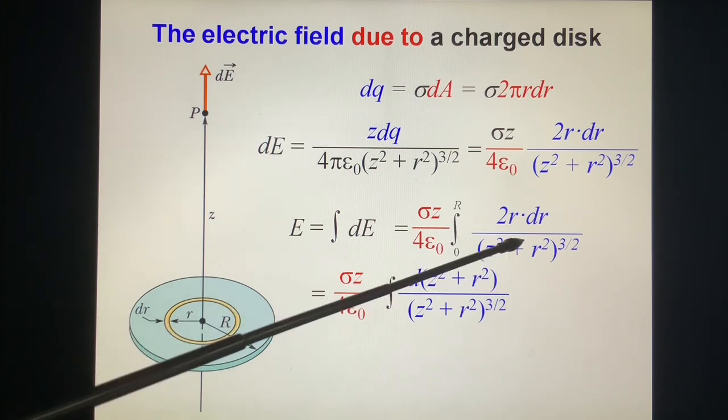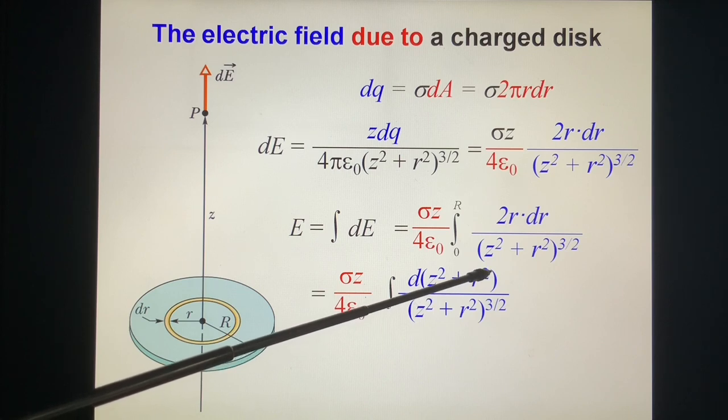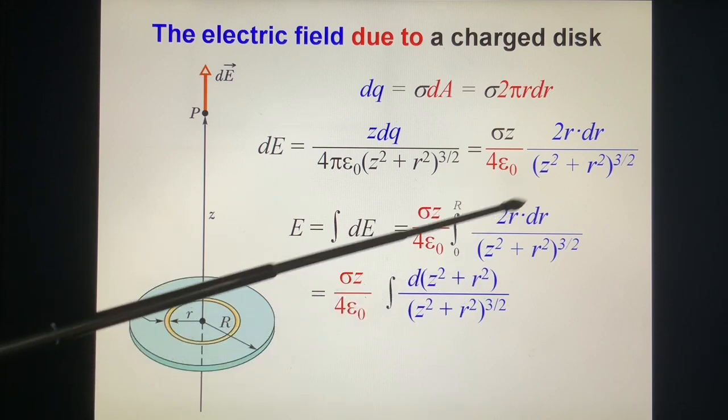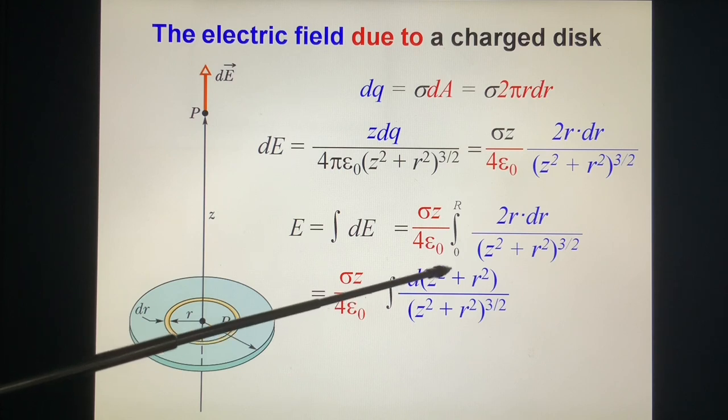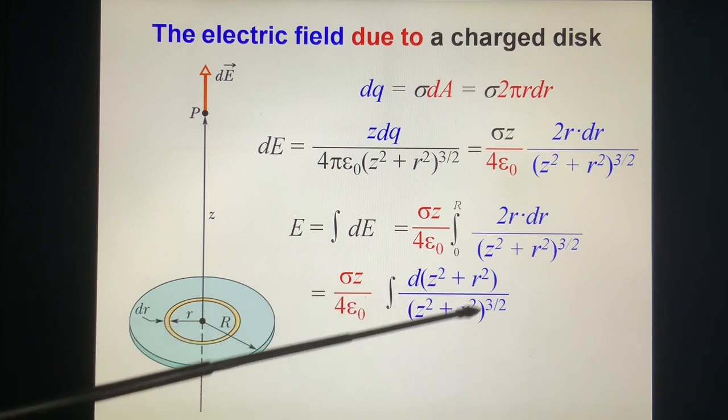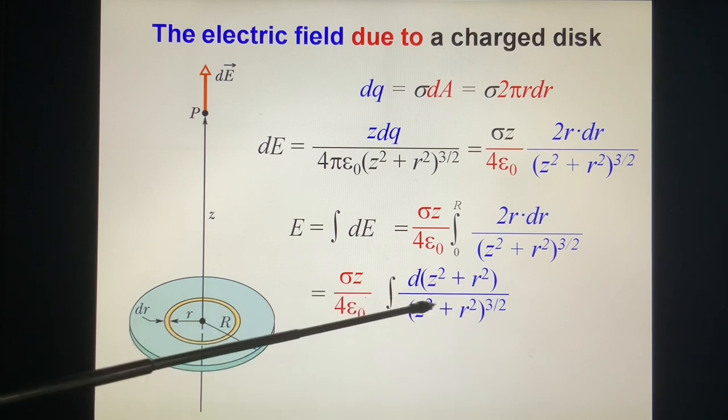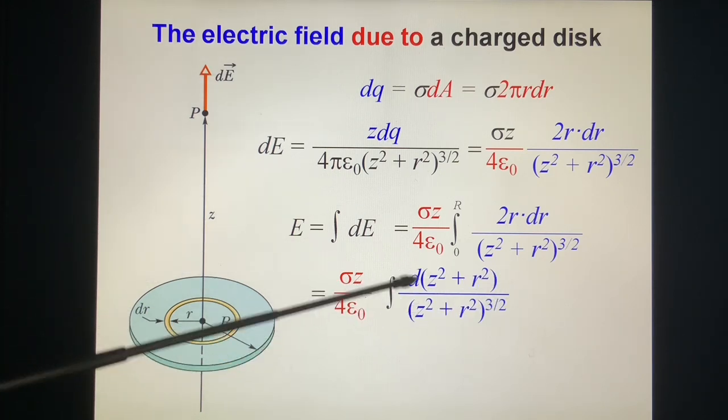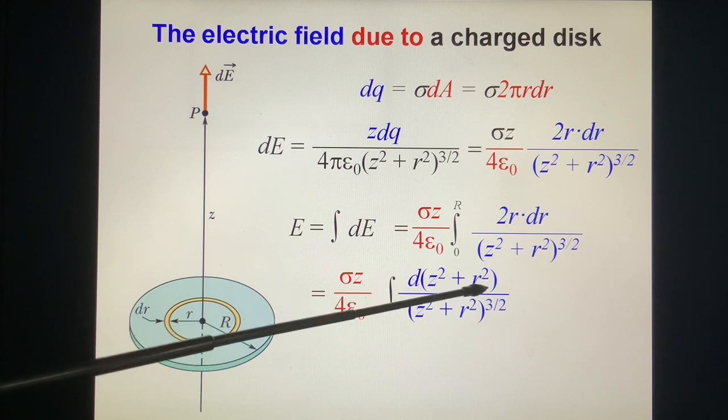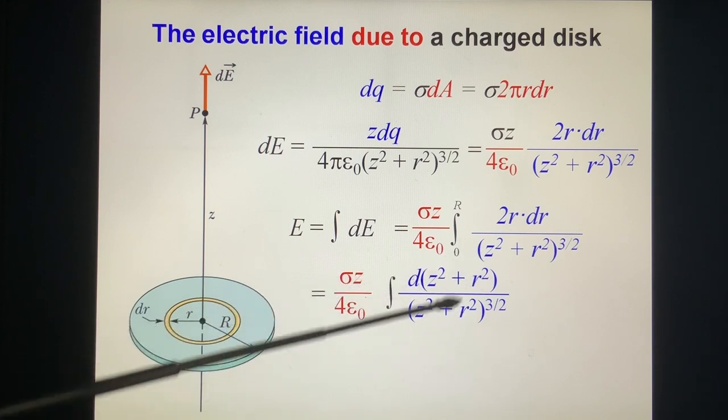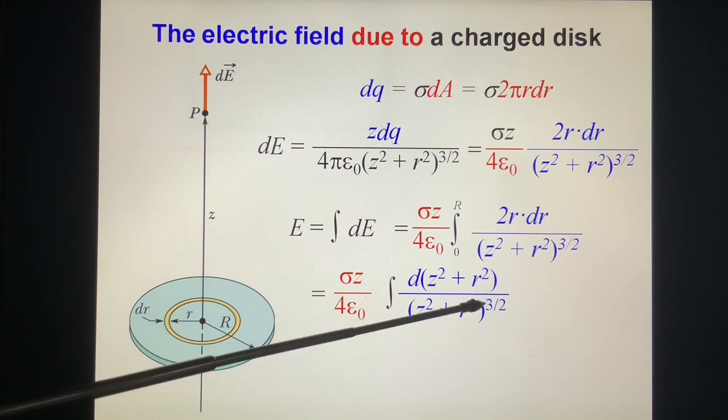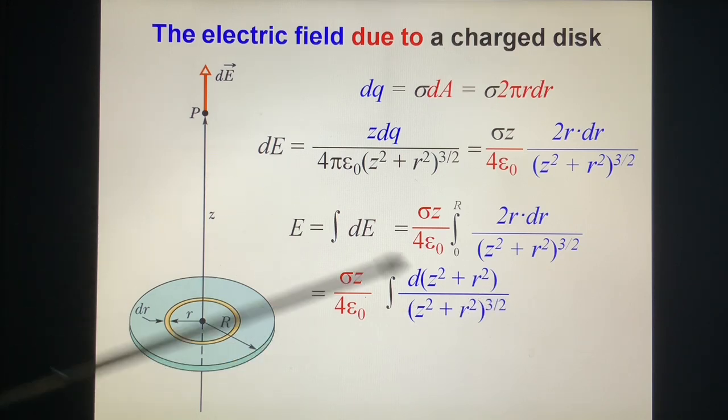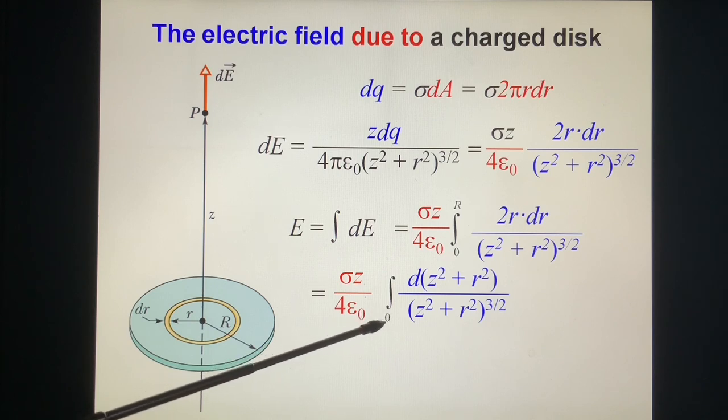We rewrite 2R dR as d(Z² + R²). How? Because 2R dR is d(R²). You do the d(R²), you get 2R dR. And the Z is a constant. We put it, d constant zero. Why? Because in the denominator we have Z² + R². So we can see this is like, suppose Z² + R² is X. This is a dx over X to power 3/2. And the integration is from R equal to 0 to capital R. Now, it's very easy. We can get this answer.